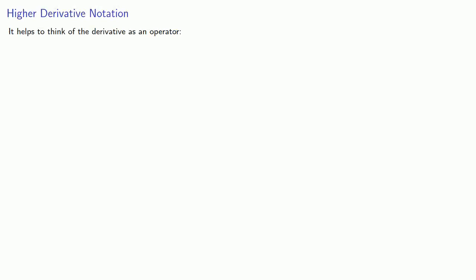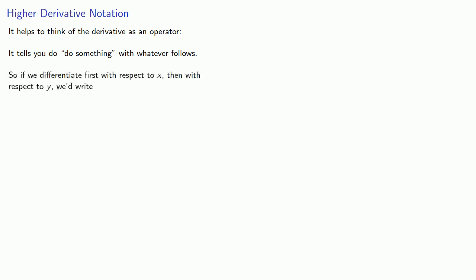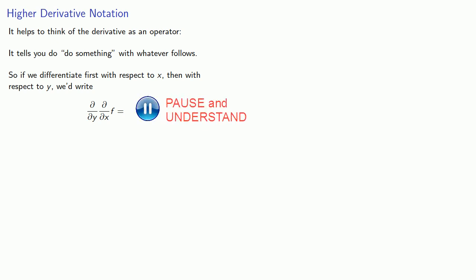With differential notation, it helps to think about the derivative as an operator — it tells you to do something with whatever follows. So if we differentiate first with respect to x, then with respect to y, we'd write our function, differentiate with respect to x first, and then differentiate with respect to y. That's why we write our differential notation this way.